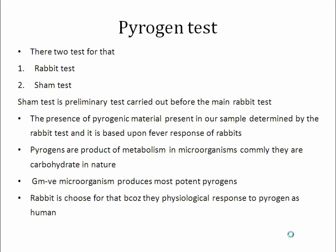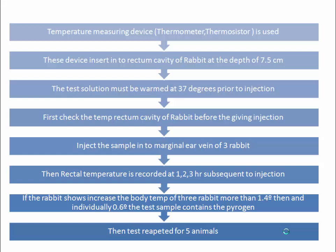The rabbit is chosen for the pyrogen test because the physiological response given by the rabbit is the same as in humans. The test sample is prepared and injected into the rabbit to detect pyrogen. To measure temperature, a thermometer is inserted into the rectum of the rabbit at a depth of 7.5 centimeters. The test solution is prepared at 37 degrees Celsius and injected into the marginal ear vein of three different rabbits. Rectal temperature is then checked again at time intervals of one, two, and three hours.